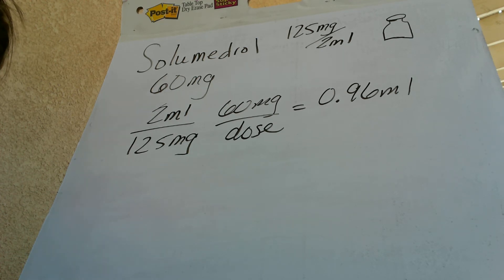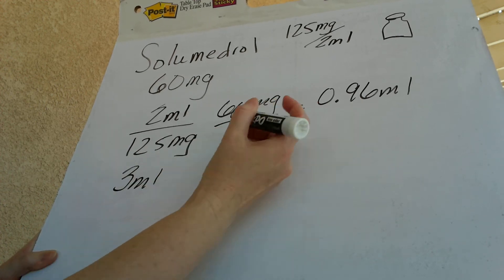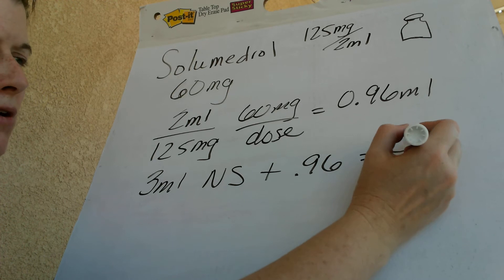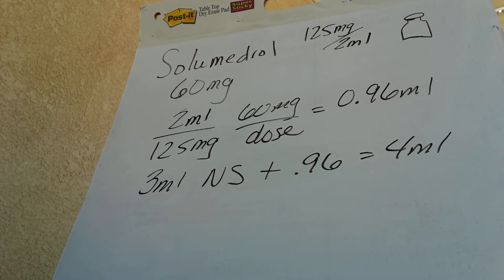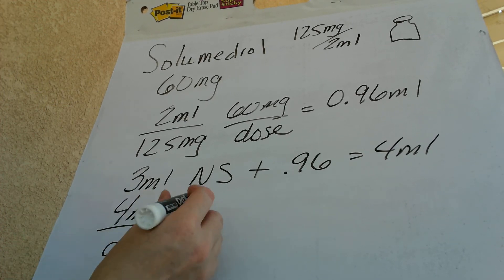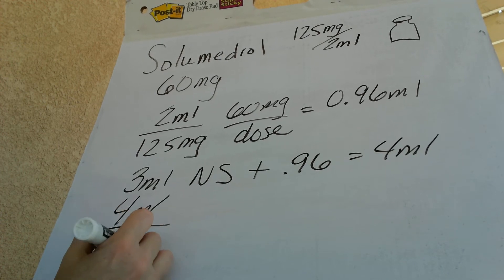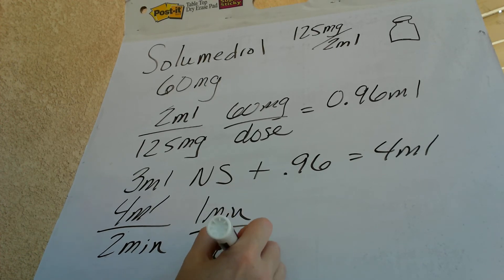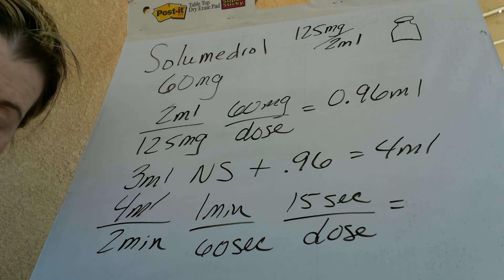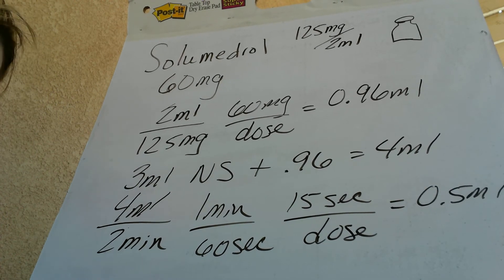I'm going to put it into another syringe because it's very difficult to divide 0.96 mLs into four 15-second increments. So I'll use a 3 mL normal saline syringe — this is almost 1 mL — giving me a total of about 4 mLs. Now I have a syringe with 4 mLs and I want to give this over 2 minutes. So: 1 minute equals 60 seconds, 15-second increments — this gives me 0.5 mLs every 15 seconds, which is much easier to push safely than if you didn't dilute it.